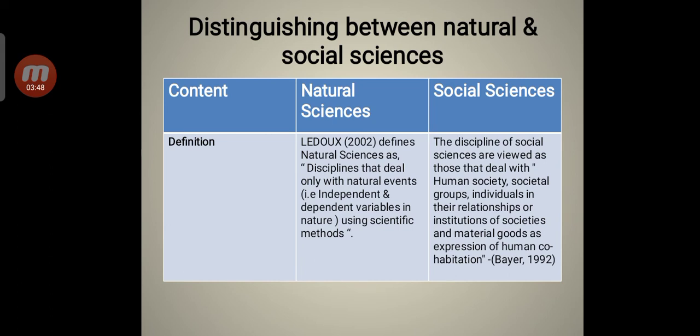Let's understand the distinction between natural and social sciences. First, with definitions. Natural sciences: Lidox in 2002 defines natural sciences as disciplines that deal only with natural events, that is independent and dependent variables in nature using scientific methods. Whereas social sciences, the discipline of social sciences are viewed as those that deal with human society, societal groups, individuals in their relationships or institutions or of societies and material goods as expression of human cohabitation by Bayer in 1992.